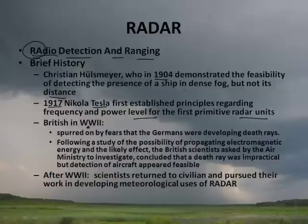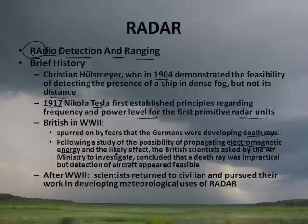The Brits in World War II were afraid that the Germans were developing something called a death ray, which turned out to be radar. When they did their study, they realized they could propagate electromagnetic energy — we learned about that in our astronomy chapters — and they were able to determine where airplanes were. It was very important for them to track German planes during raids in World War II.